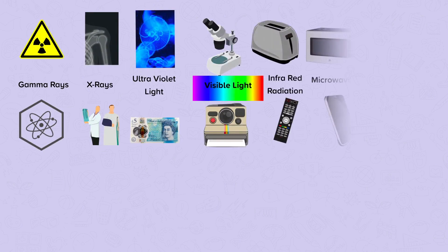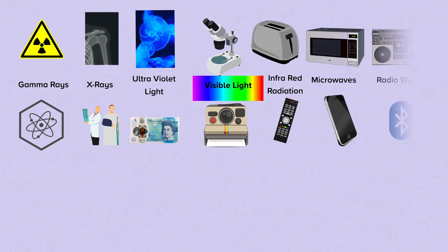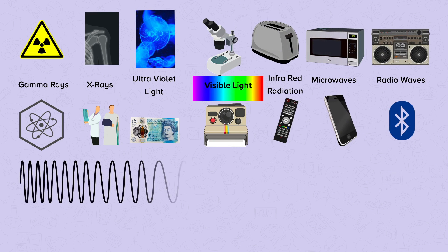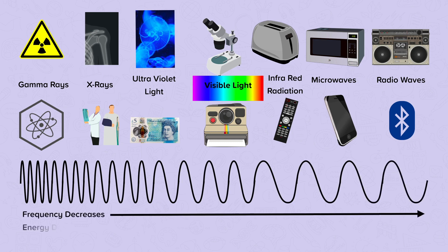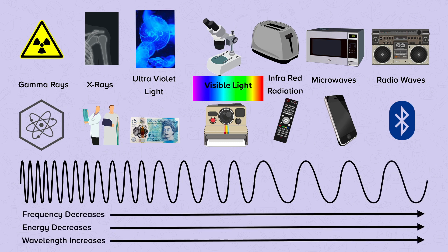The electromagnetic spectrum is a group of waves. You'll have probably heard of some of them before: gamma rays, x-rays, UV, visible light, infrared radiation, microwaves, and radio waves. Gamma rays are the highest frequency and shortest wavelength, and the frequency decreases and wavelength increases as we go down the spectrum towards radio waves. We're going to look at each one in turn, their dangers and their uses.